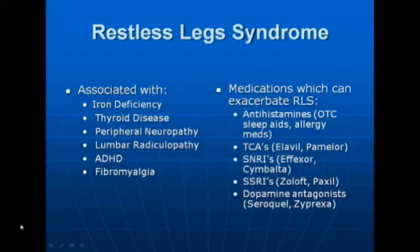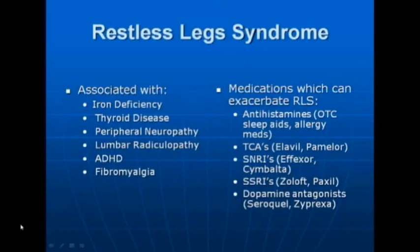Restless legs is associated with iron deficiency and thyroid disease, and we need to test for those in everyone presenting with it. It can be a manifestation of peripheral neuropathy or lumbar radiculopathy — a pinched nerve in the back. In fibromyalgia, it is probably present in 30 to 40 percent of patients. It can be worsened by antihistamines such as Benadryl, certain tricyclic antidepressants such as Elavil and Pamelor — amitriptyline and nortriptyline — which are very commonly used in fibromyalgia. SSRIs such as Zoloft and Paxil can sometimes worsen it, and dopamine antagonists such as Seroquel and Zyprexa can very much exacerbate restless legs.